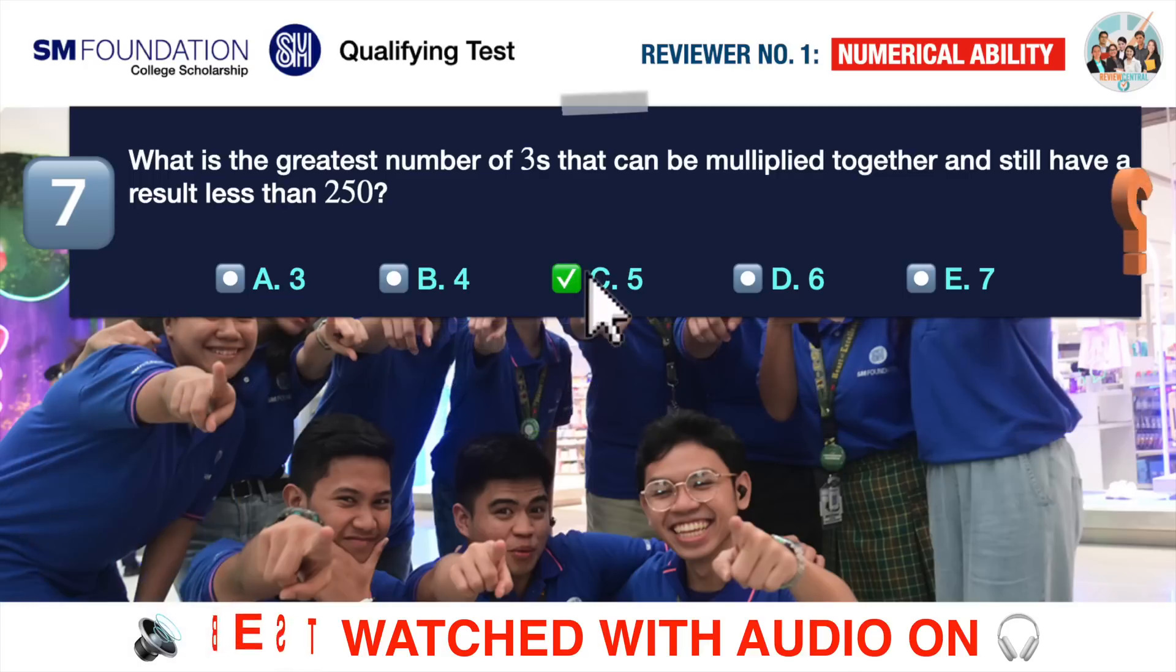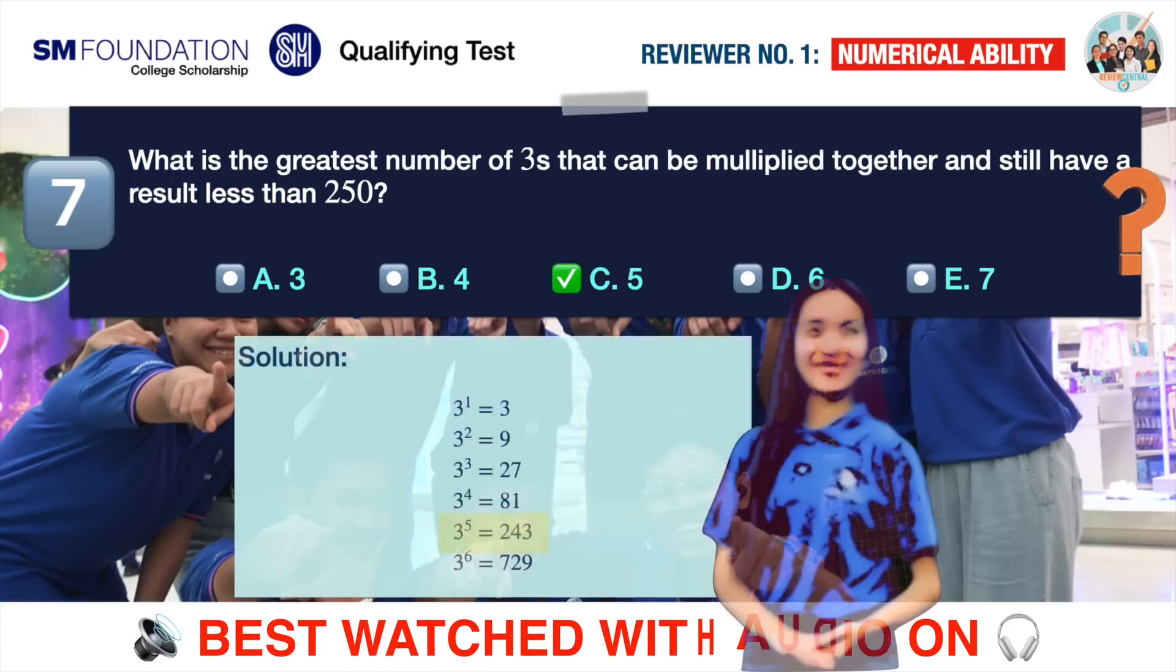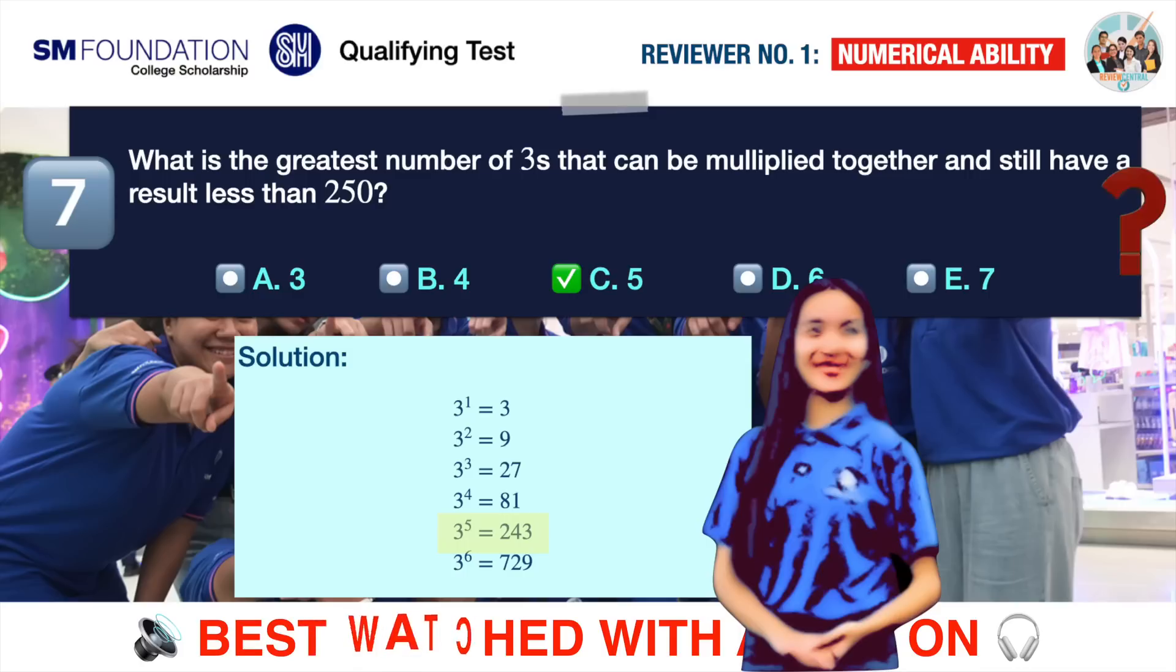The correct answer is C 5. 3 raised to 1 equals 3. 3 raised to 2 equals 9. 3 raised to 3 equals 27. 3 raised to 4 equals 81. 3 raised to 5 equals 243. 3 raised to 6 equals 729. Therefore, the answer is 5.